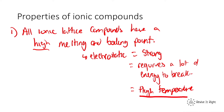We need to provide a very high temperature to break these strong electrostatic forces between the ions, and because of that, they have a high melting and boiling point. So if asked why sodium chloride has a high melting point, the answer is always the same: the electrostatic forces between the ions are strong, therefore it requires a lot of energy to break, and therefore sodium chloride has a high melting or boiling point.